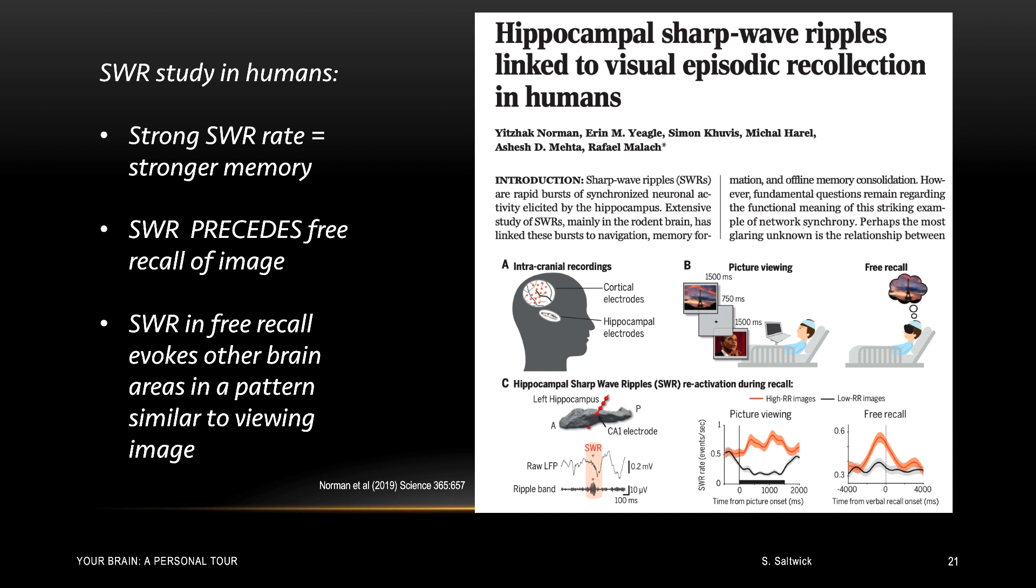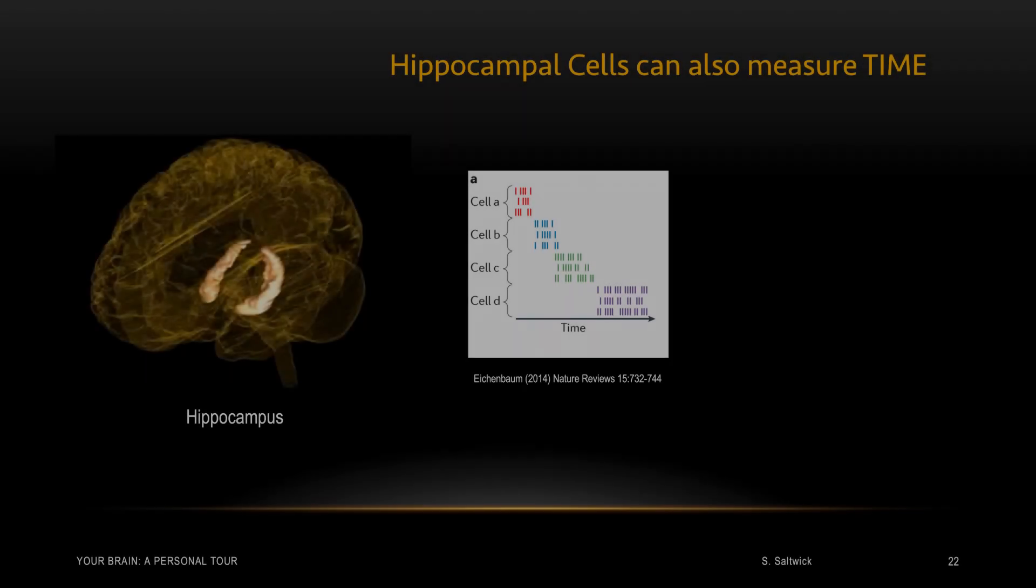In other words, the sharp wave ripple brought forth brain patterns in recall that were like the patterns which occurred in actual perception. The patients were, in a sense, seeing the object during recall, all driven by a sharp wave ripple. Wow. The sharp wave ripples are really important in memory. But wait, there's more.